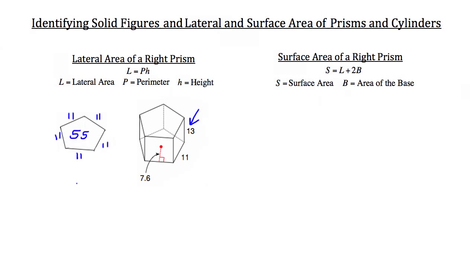So in order to calculate the lateral area, we're just going to take 55, the perimeter, and multiply it by the height of 13. If you do that, you get a lateral area of 715 square units.